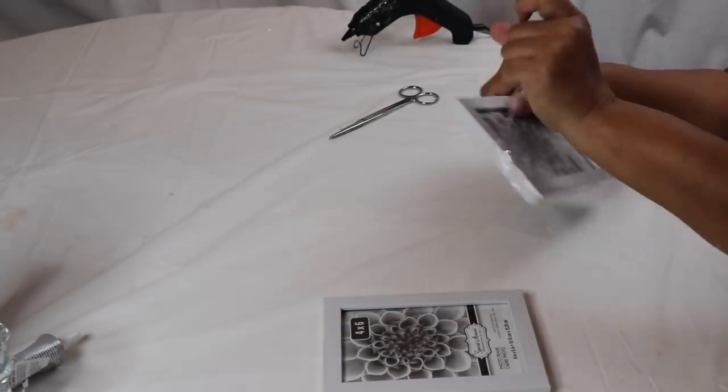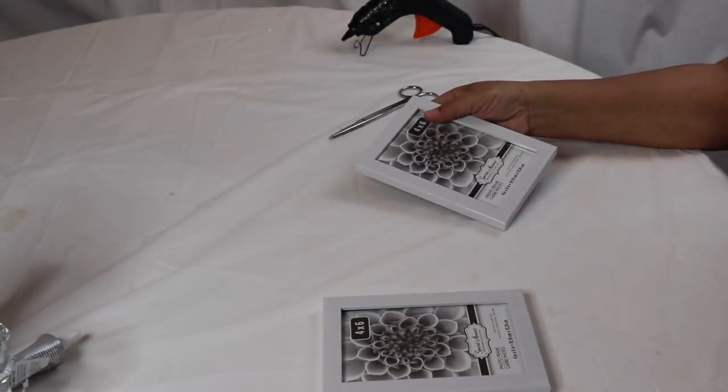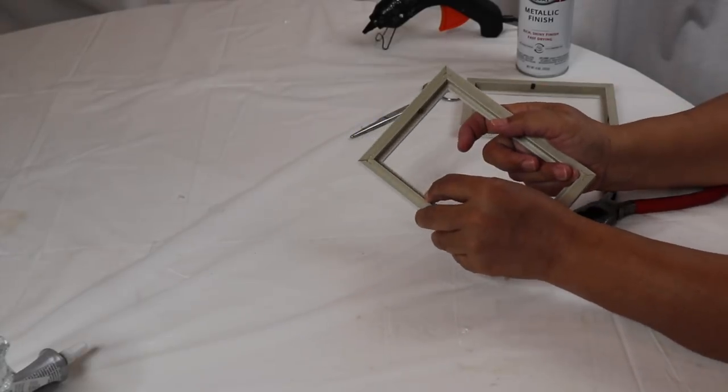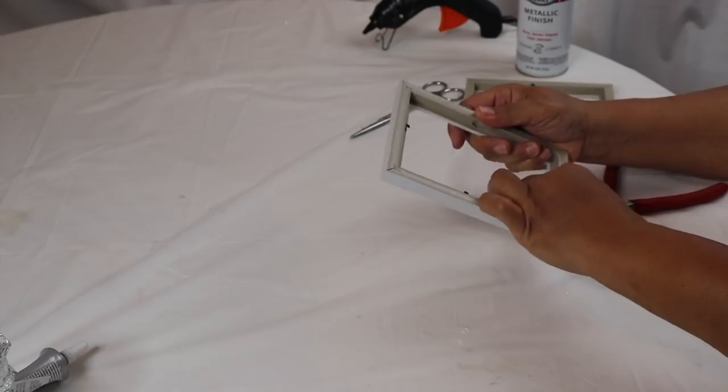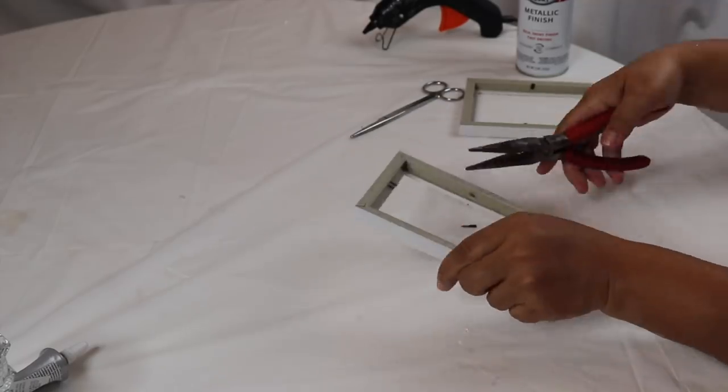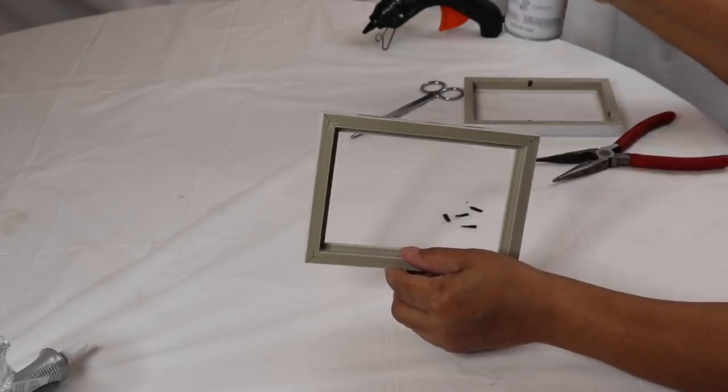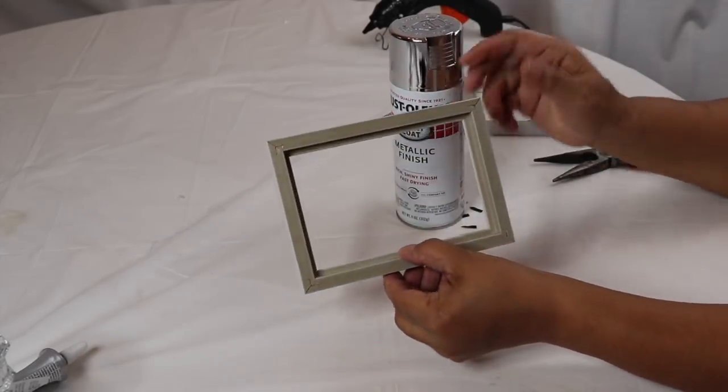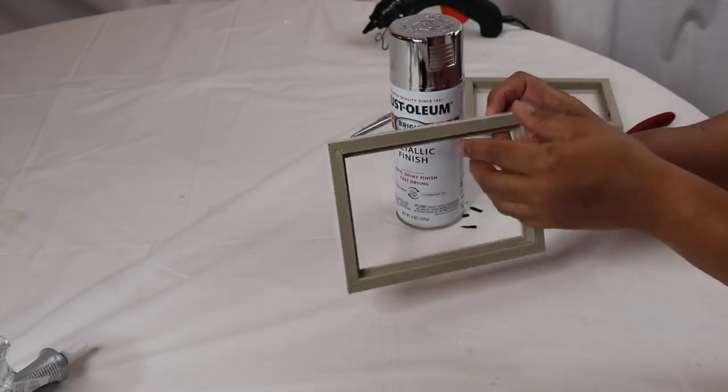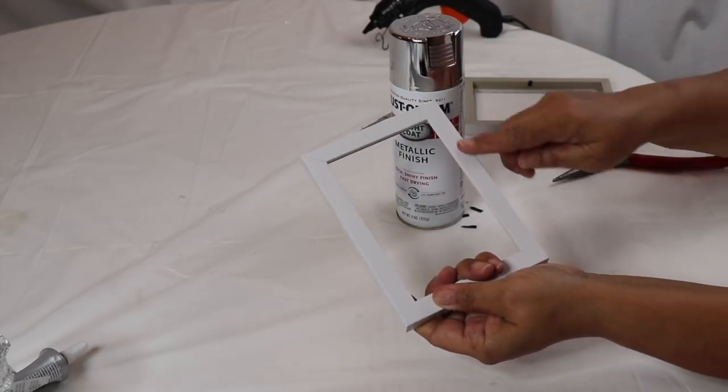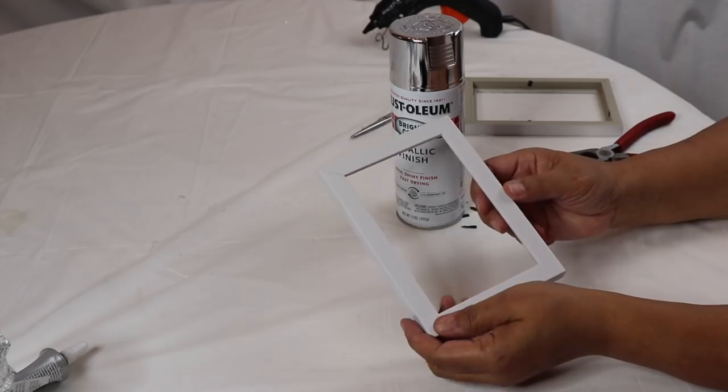Take both frames from their packaging and then take the frames completely apart. Using pliers, remove all of the tabs from around the frame. Once you remove all the tabs, you're going to take your frame and spray paint it silver. Be sure to get inside the frame and along the edges as well. You really don't have to worry about the surface because it's going to be covered.